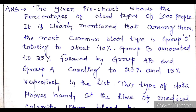'The given pie chart shows the percentages of blood types of 1000 people. It is clearly mentioned that among them, the most common blood type is O.' As we generally know, O blood type people are very common — this blood type is the universal donor. Near about 40 percent of people have blood group O.